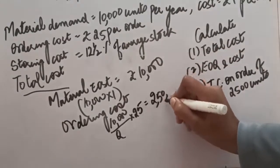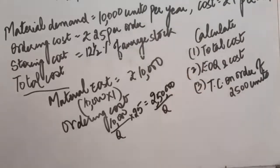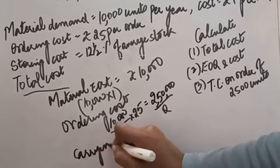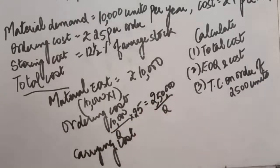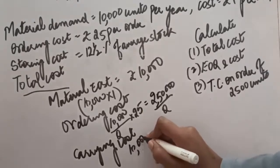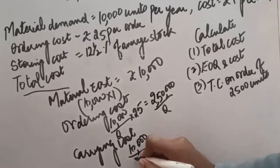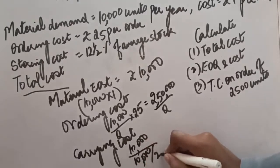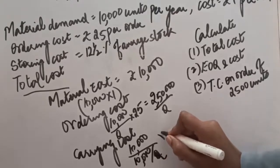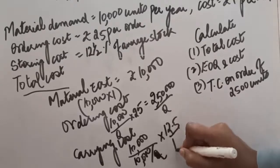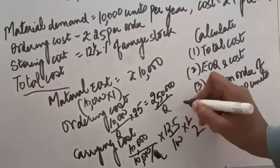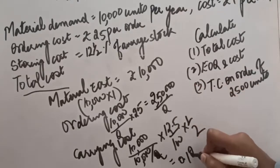The third component of total cost is carrying cost. The formula for carrying cost is quantity q divided by 2 — representing average inventory — multiplied by 12.5 percent, the carrying cost rate. Solving this gives carrying cost equal to 0.125q. These three costs — material cost, ordering cost, and carrying cost — are added to calculate the total cost.